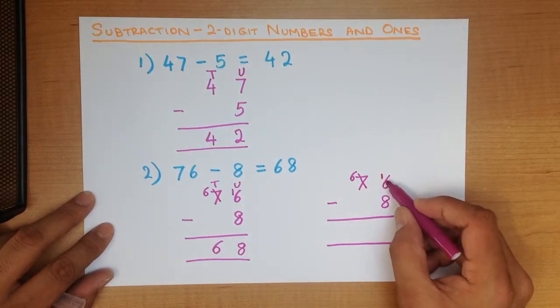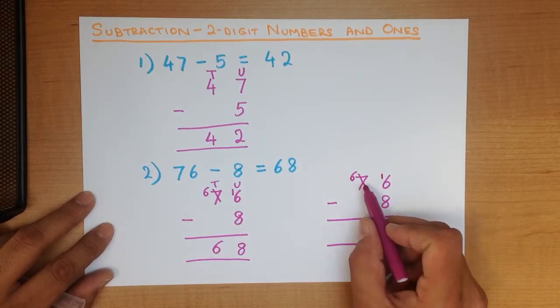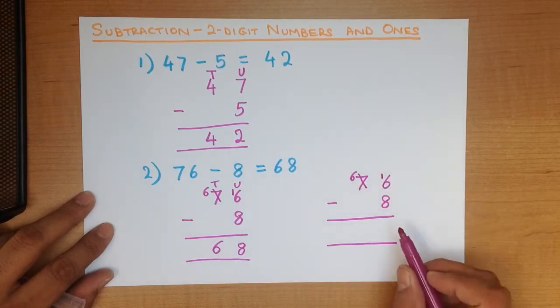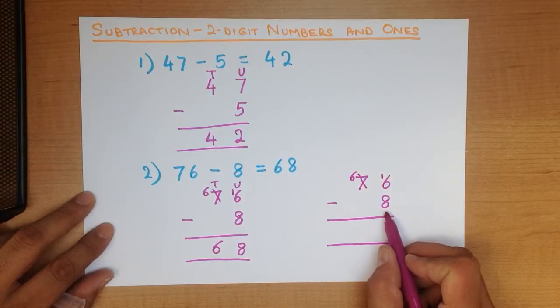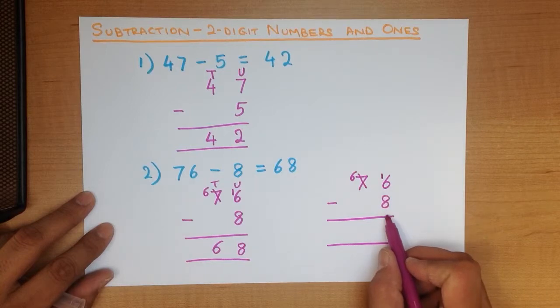This number is now 16. Because the number we have taken is a 10. It's become 16. So now, the units column looks like this. It is 16 minus 8.